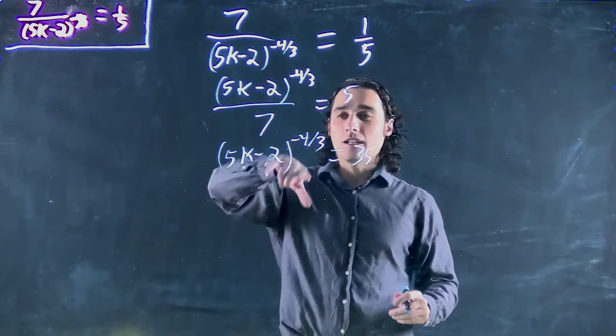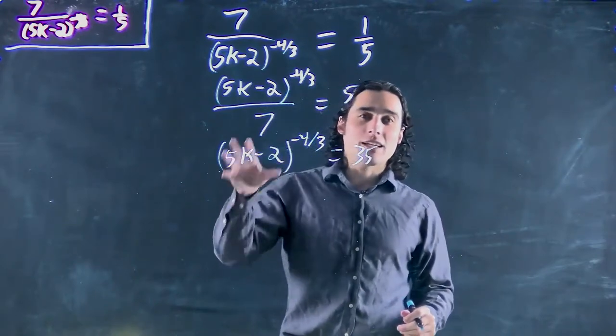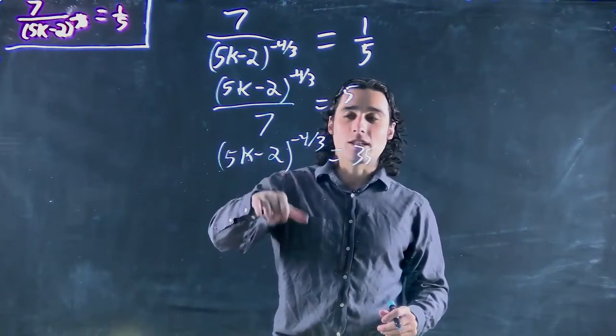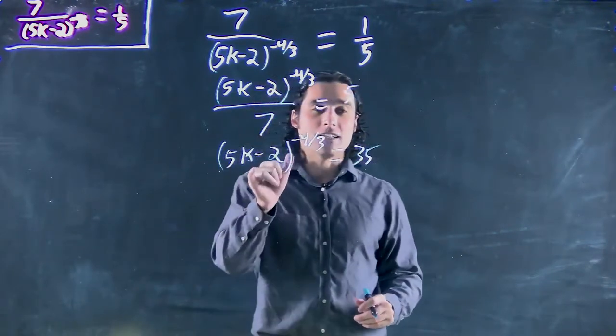As always, we're assuming k is positive in this case, so we're going to get a positive number in there large enough that this is not going to be negative.